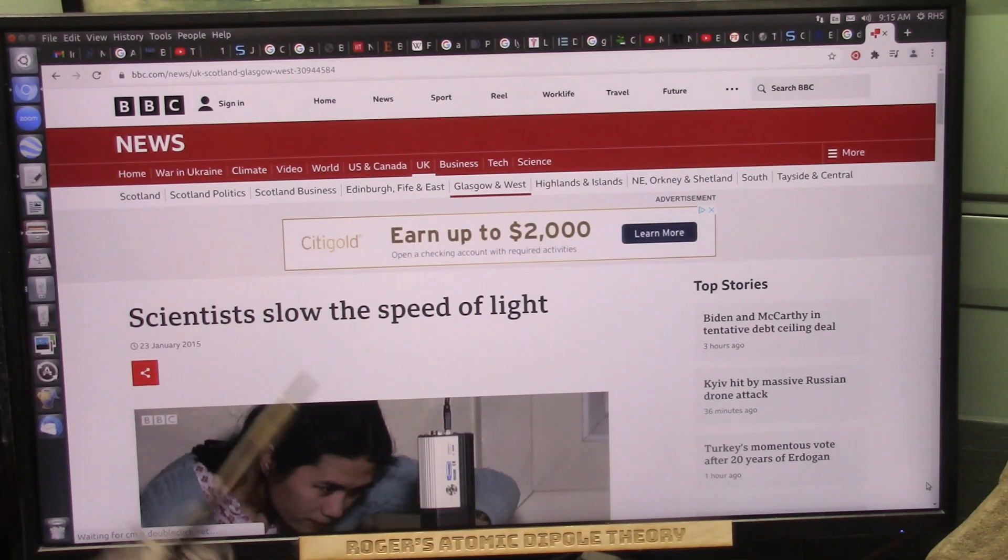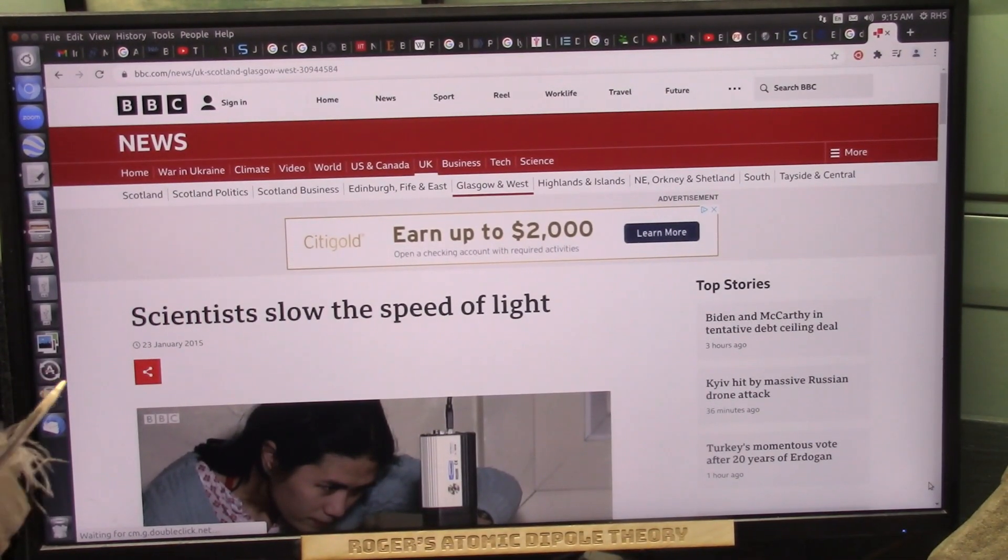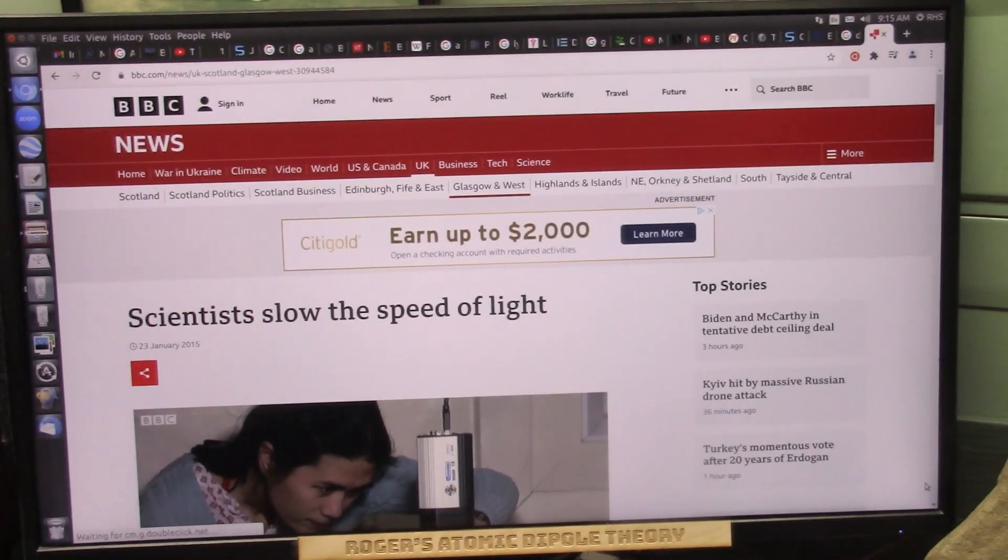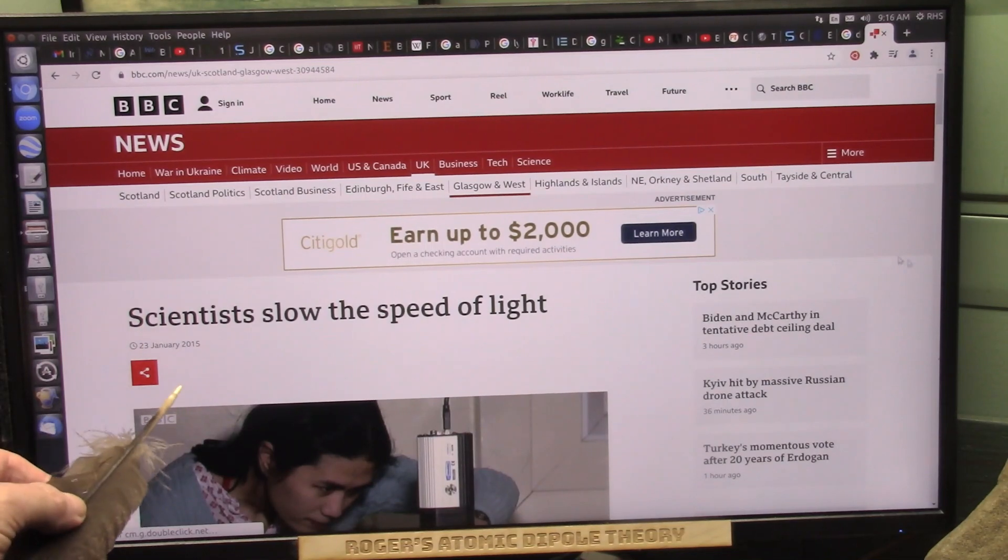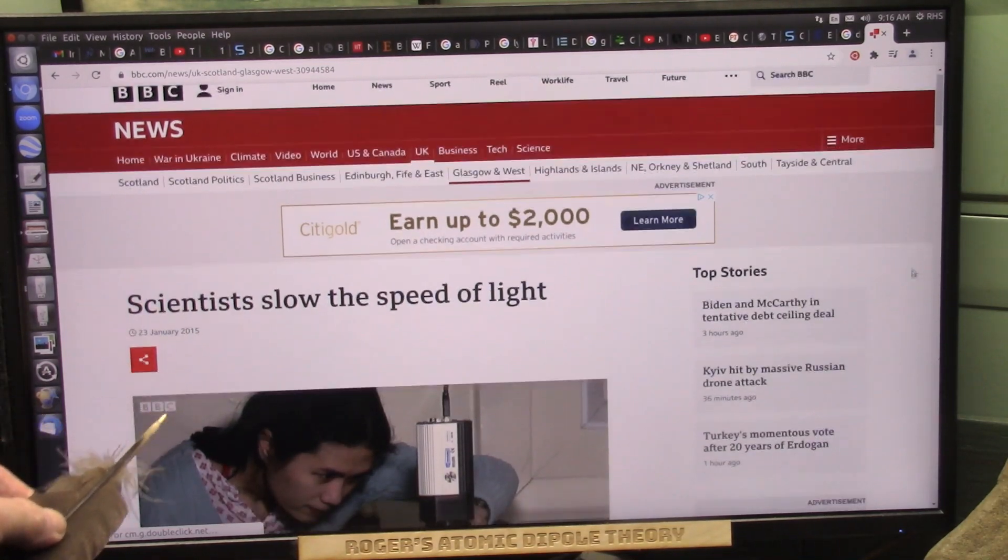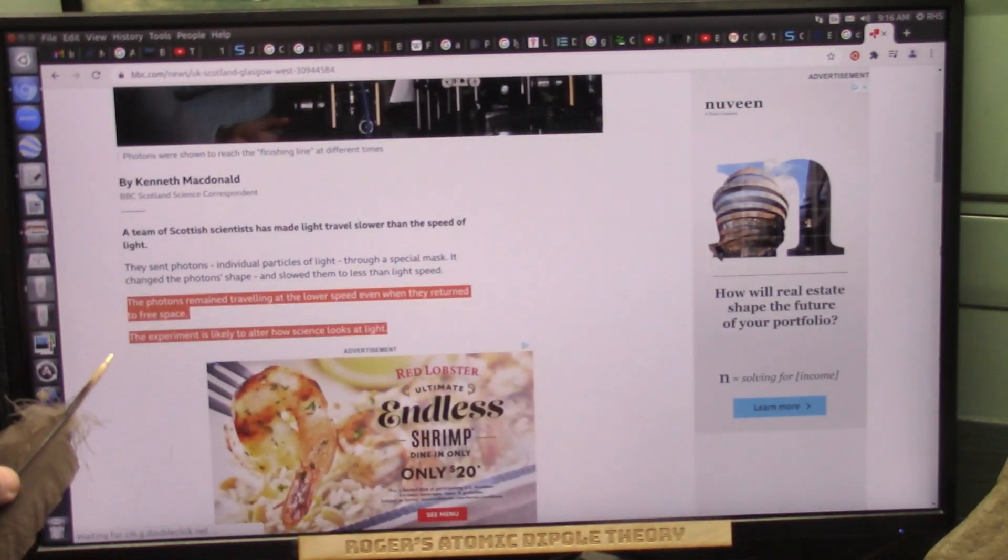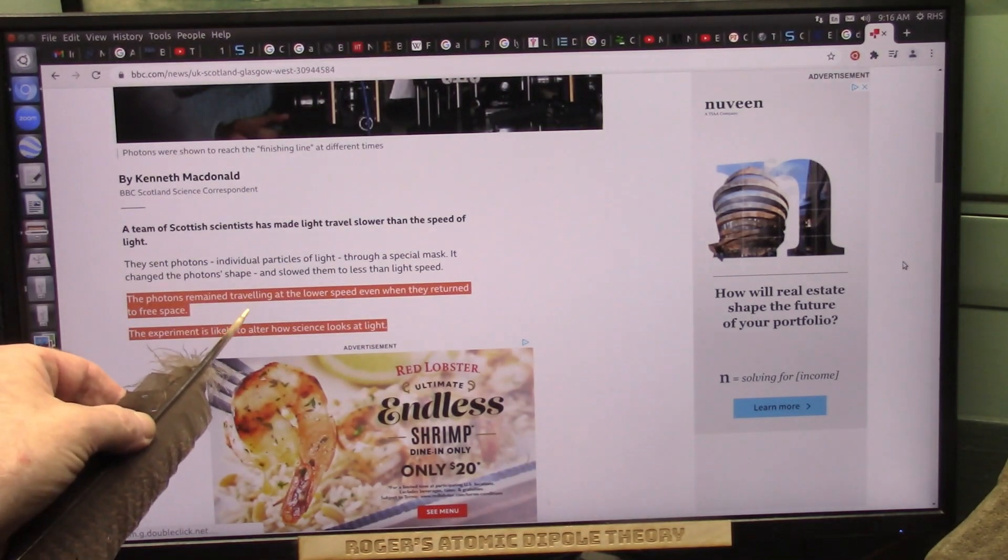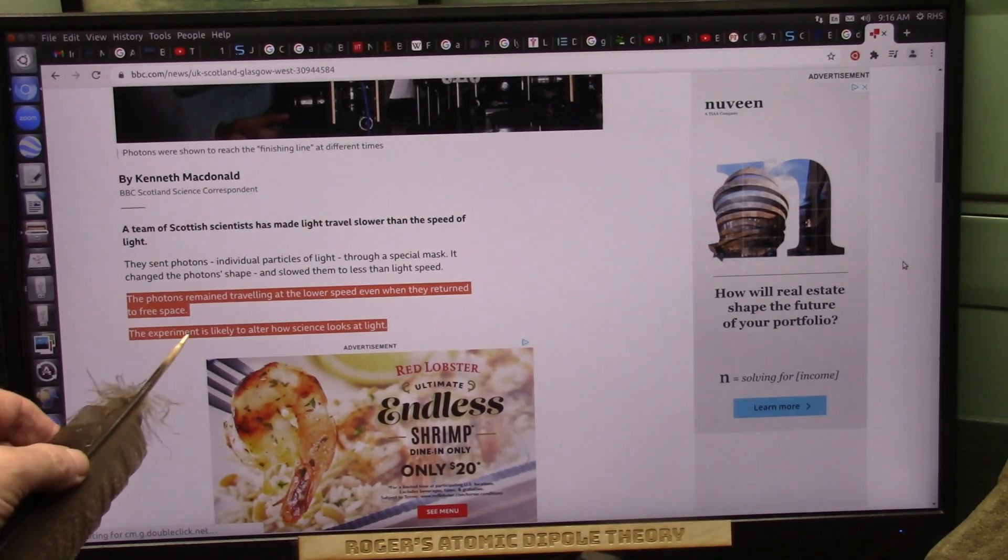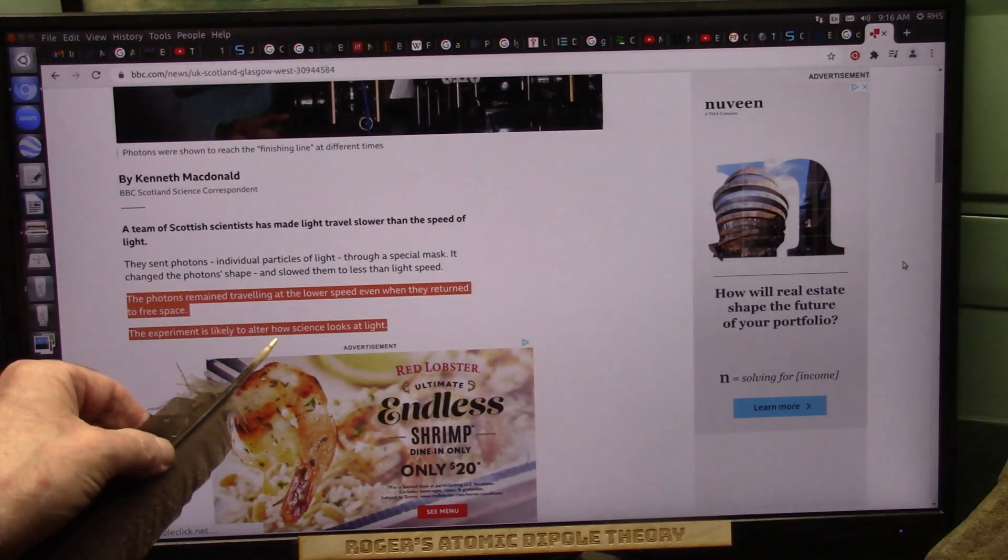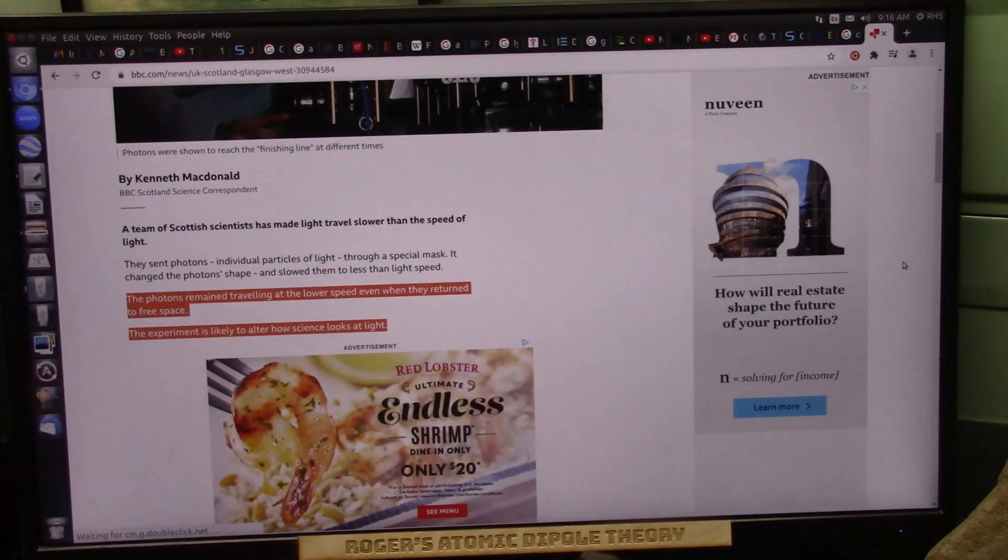Everyone knows it can slow down. That is not a question. They say it speeds back up. No, it doesn't. It says scientists slowed the speed of light. Not only did they slow it, they slowed it down to where it never came back fast again. And this is back in 2015, eight years ago.